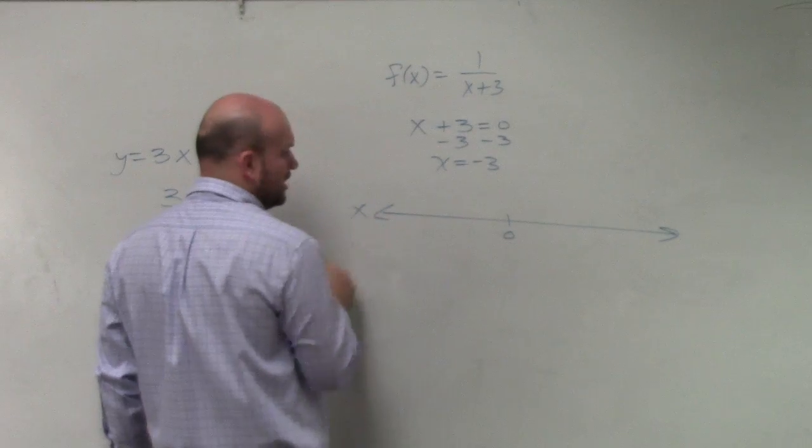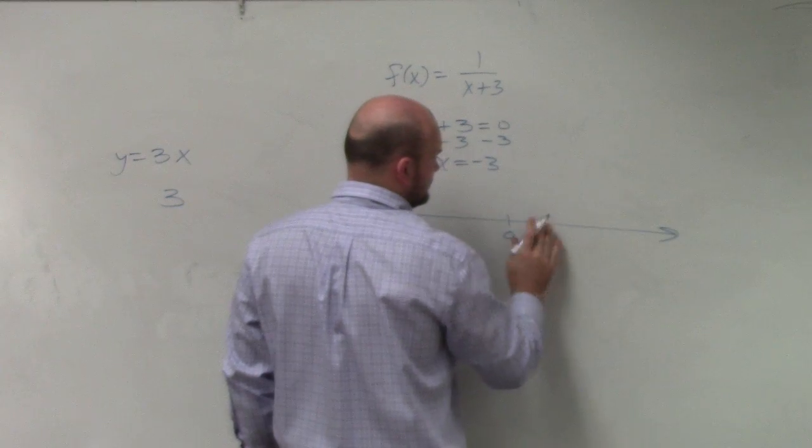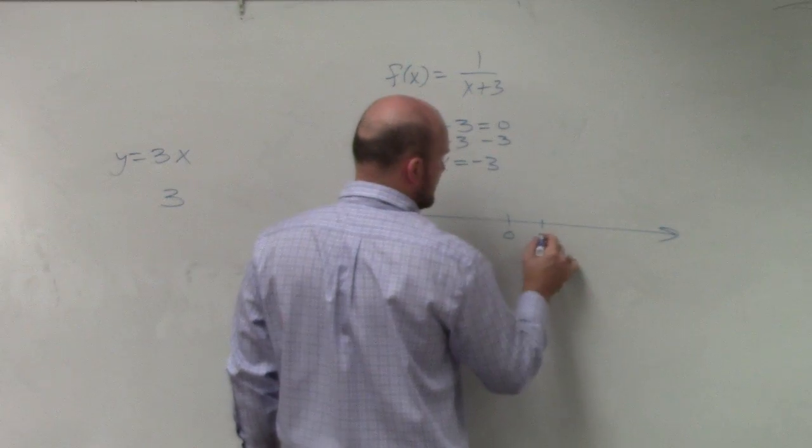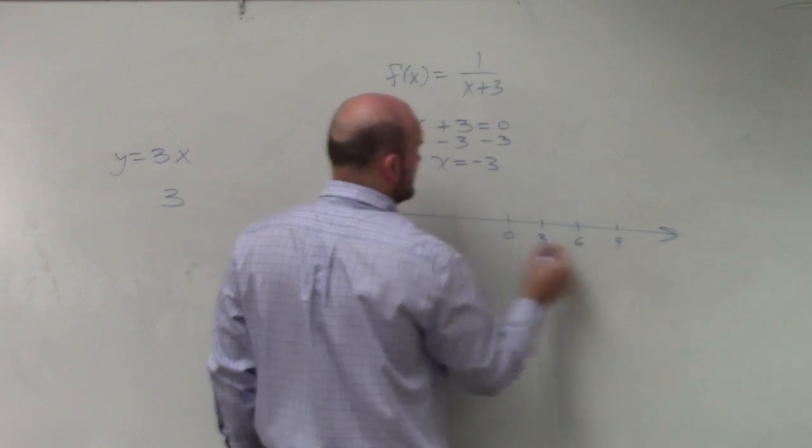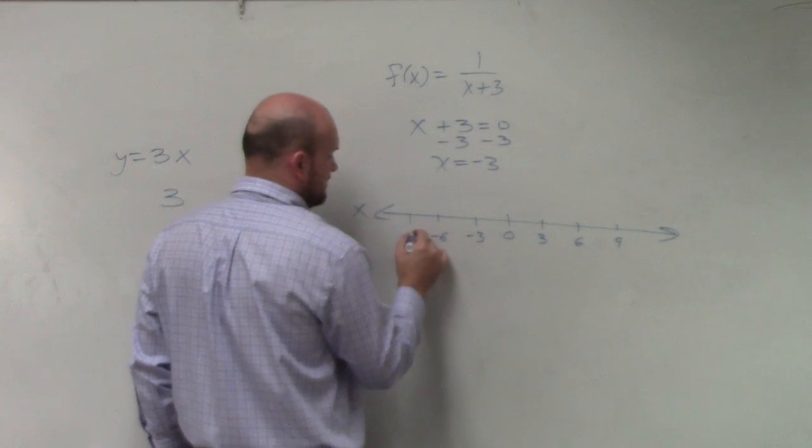Let's pretend these are all x values. 1, actually let's go by 3's. 3, 6, 9, negative 3, negative 6, negative 9.